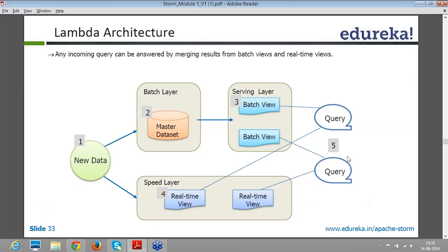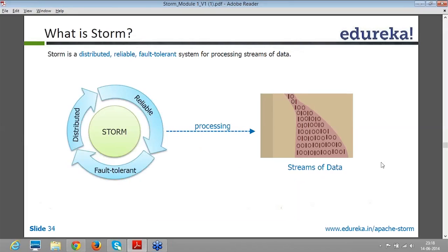So then your query might get executed over both the batch layer in pre-computed view or the speed layer computed view. Both places you can actually trigger your query to get the actual results. So that's the final step. That's what is called Lambda architecture.